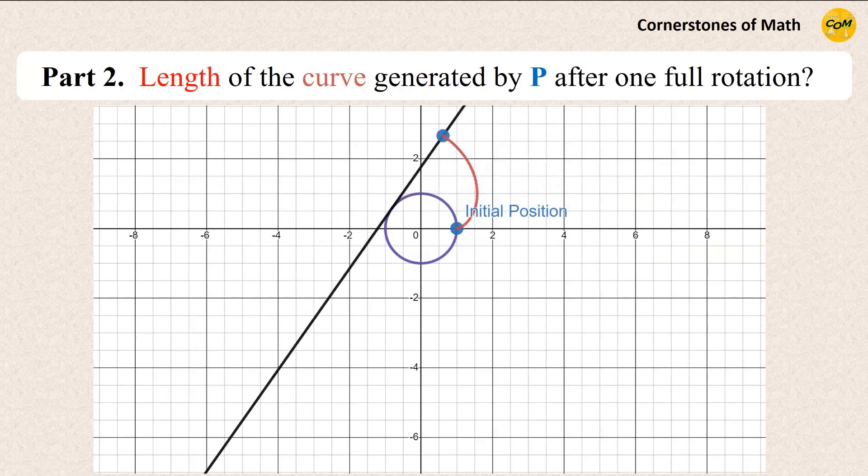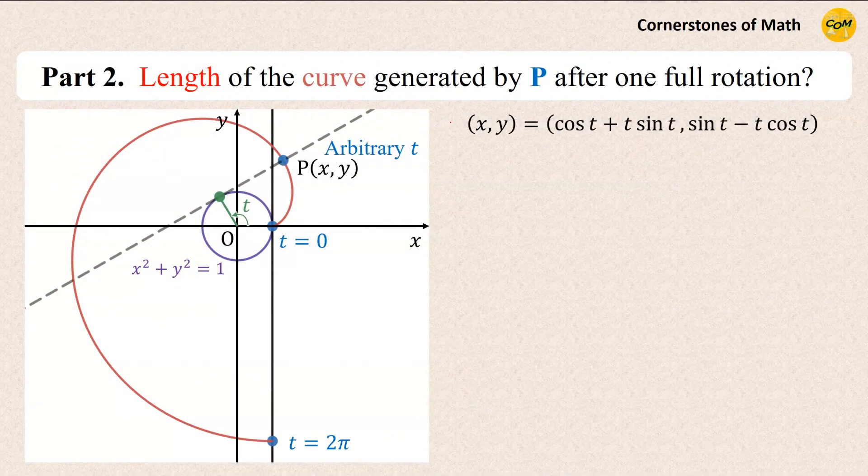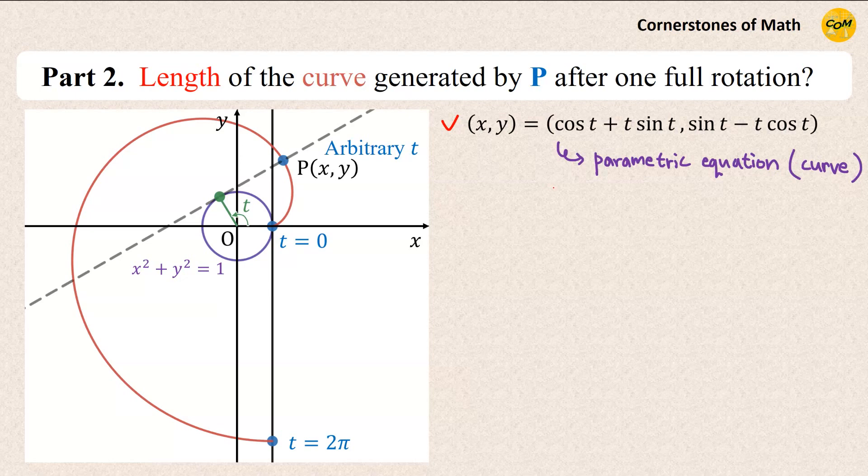When the line made one full rotation around the circle, what is the length of the curve generated by point P? All right, so first, this is the expression for the coordinates of point P we have just obtained. This is also called the parametric equation or parametric curve because it is expressed using the parameter T. The length of the parametric curve can be calculated by this formula. The length L is given as the integral of the square root of dx over dt squared plus dy over dt squared, and the interval is from 0 to 2π, because during the first full rotation, our parameter T changes from 0 to 2π.